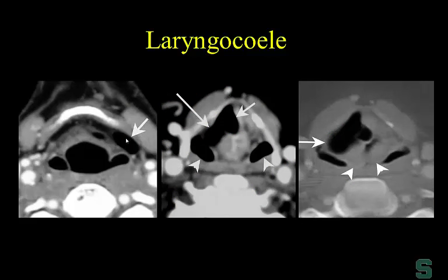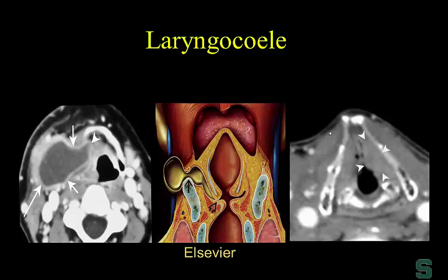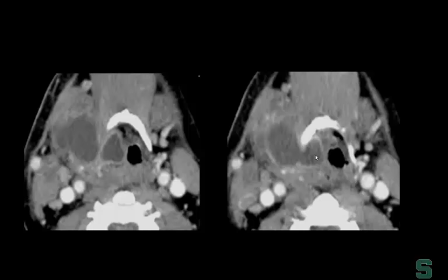Laryngoceles can be air-filled. Importantly, the most common cause of laryngocele is actually squamous cell carcinoma — so anytime you see a laryngocele, look for an obstructing lesion involving the true or false vocal cord. A laryngocele that becomes infected is a laryngopyocele, with a similar appearance but clinically distinguishable, and surrounding fat reticulation visible on imaging.